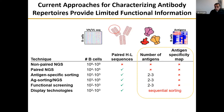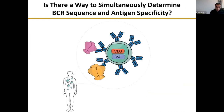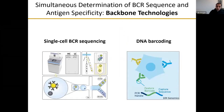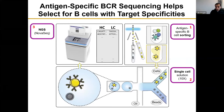Mostly that's due to intrinsic limitations of the technologies used. So we started thinking about whether we can get simultaneous information about both the paired heavy-light chain sequences of the B cell receptors at the single-cell level, as well as the antigens that a given B cell can recognize. The two major platforms we are using are single-cell BCR sequencing and DNA barcoding, which most of you are familiar with.